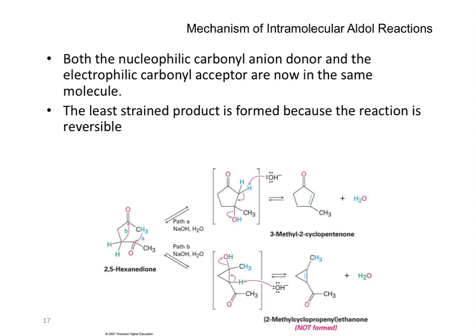That is exactly the last slide. I worked out the mechanism, and you can go through the slide. Notice in this particular case we have shown the formation of the three-membered ring, which after loss of the hydrogen generates a three-membered ring — as against the five-membered ring, which is way more stable, and hence that is the process we will follow for the formation of the aldol product.